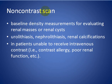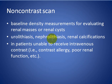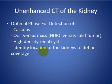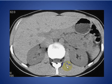The non-contrast scan, or unenhanced KUB, is a baseline study for measuring renal masses, renal cysts. It is also used for detection of calculi in the kidney, ureters, and other calcifications. It is used to localize the kidney and for detection of hyperdense renal cysts.